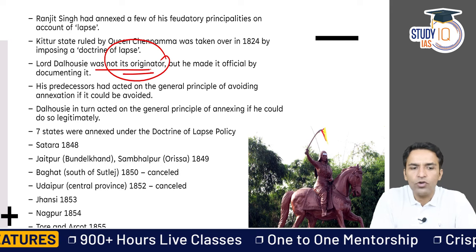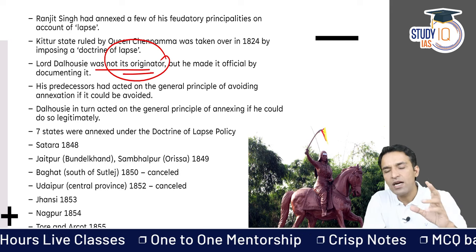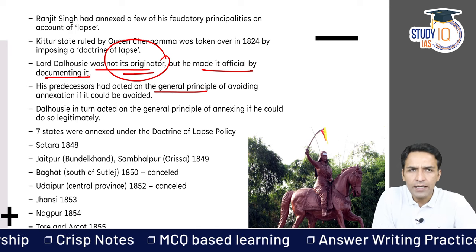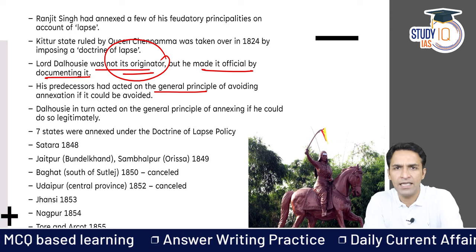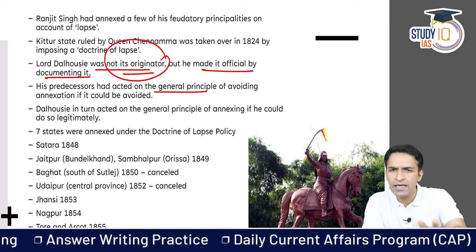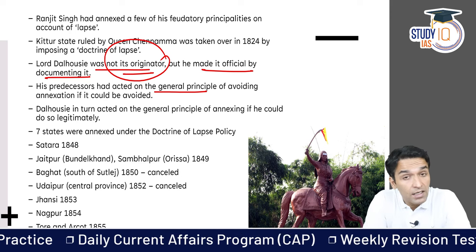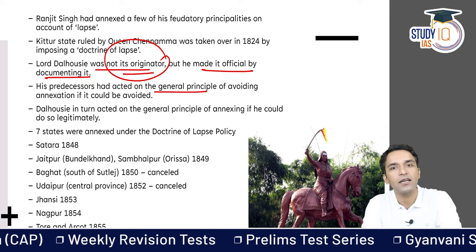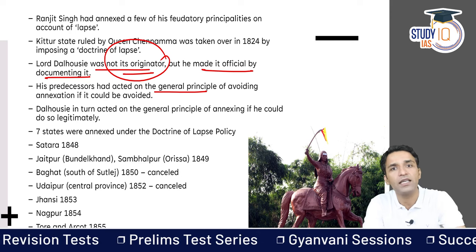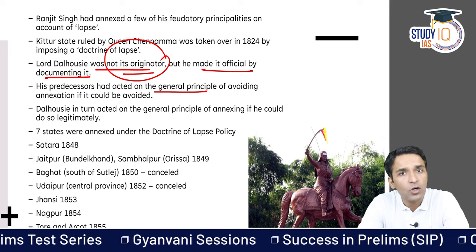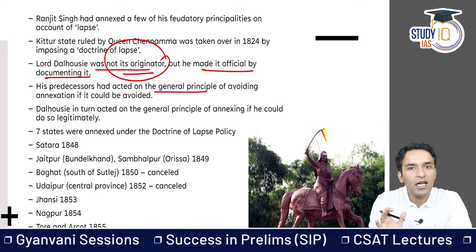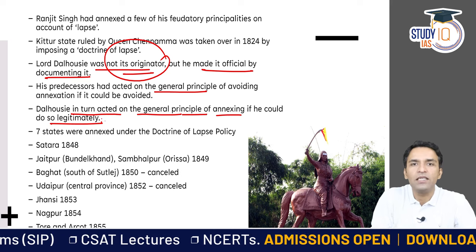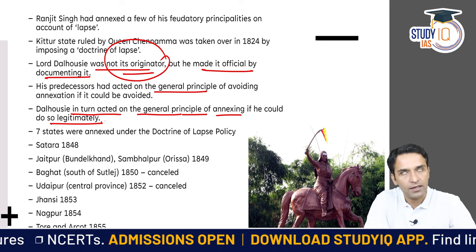Earlier governors preferred subsidiary alliance over annexation by war. But Dalhousie was a colonial expansionist — his mindset was of expansion. When he got the excuse of the Second Anglo-Sikh War, he annexed Punjab. He also looted the Kohinoor Diamond in the Second Anglo-Sikh War. Once Dalhousie had the Doctrine of Lapse, he acted on the general principle of annexing whenever he could do it legitimately — as soon as he got an excuse for annexation, he would do it.